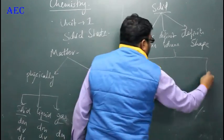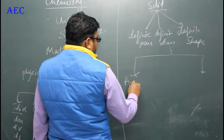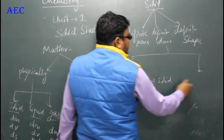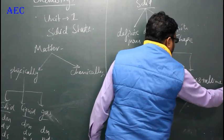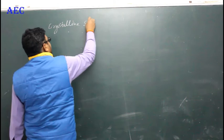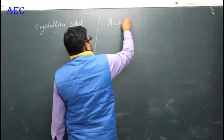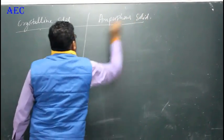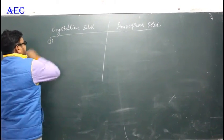Solid can also be classified into two types: amorphous solid and crystalline solid. Now we will make the difference between these two.